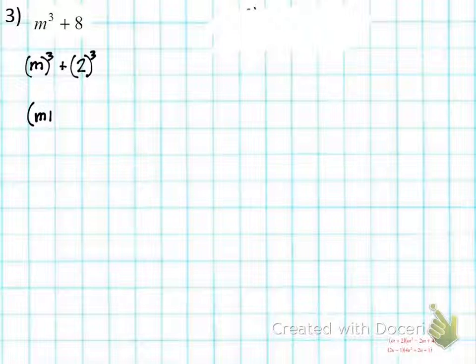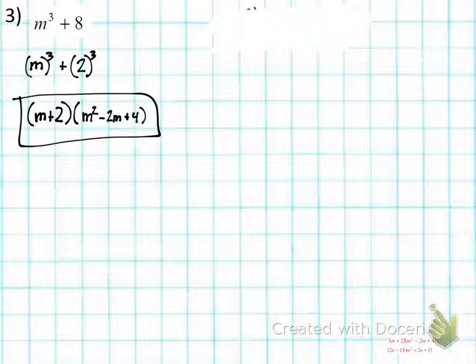So we got M plus 2. And then, what's a² in this case? M². And then, what sign should I have next? Subtraction. And then 2 times M. Finish up my problem for me, please. Go. Make sure you simplify, right? We don't just leave it as 2². It's going to be plus 2², which is 4. And that's it. Make sense?